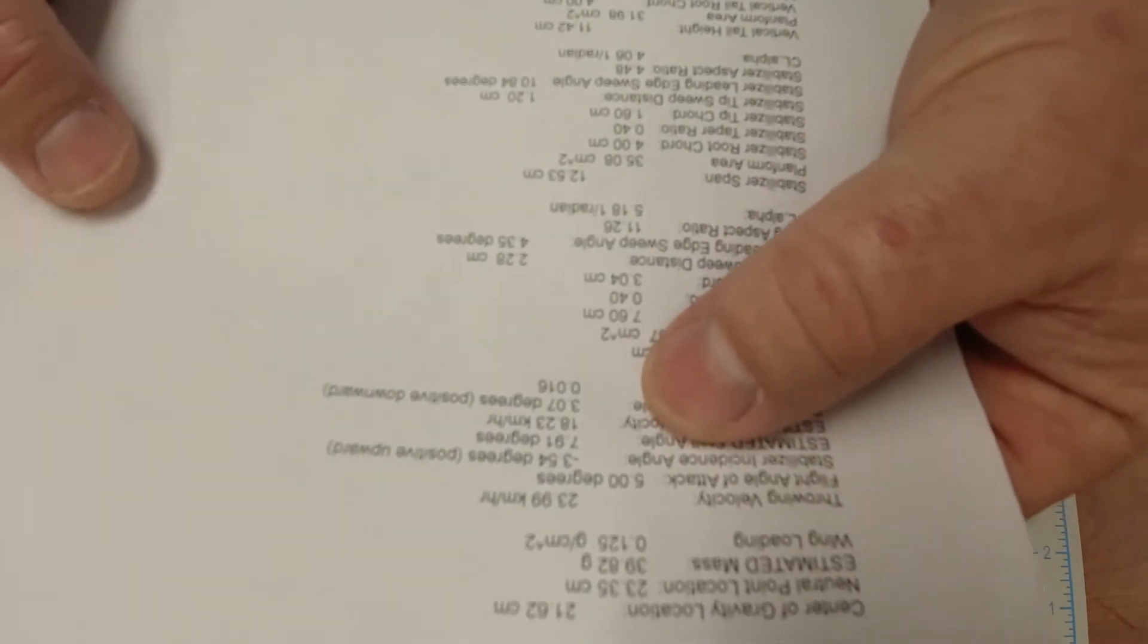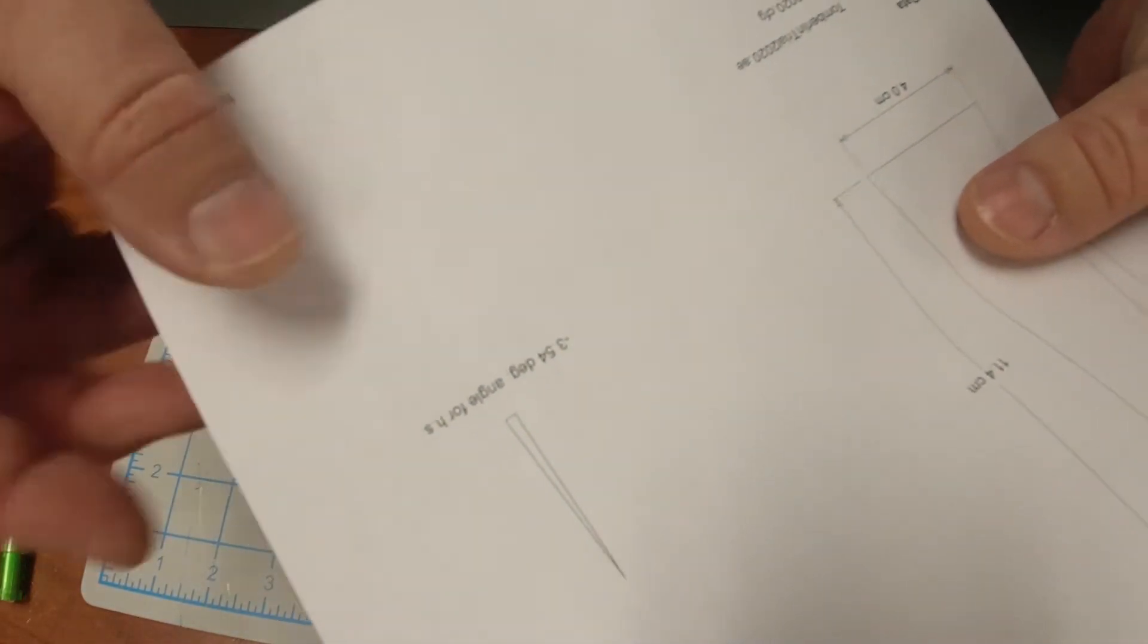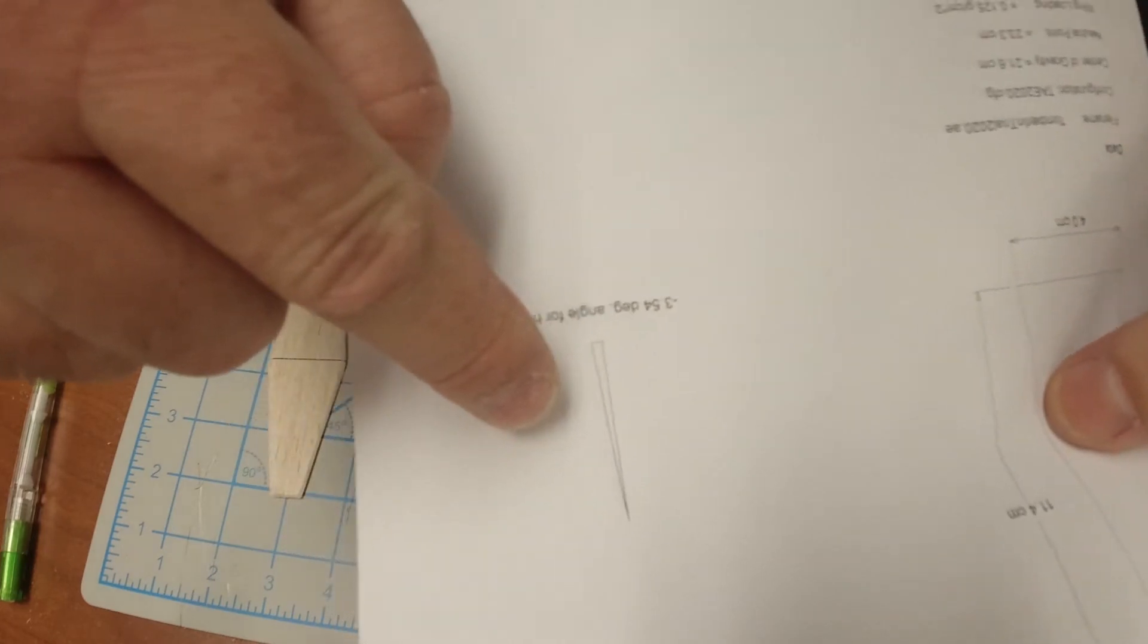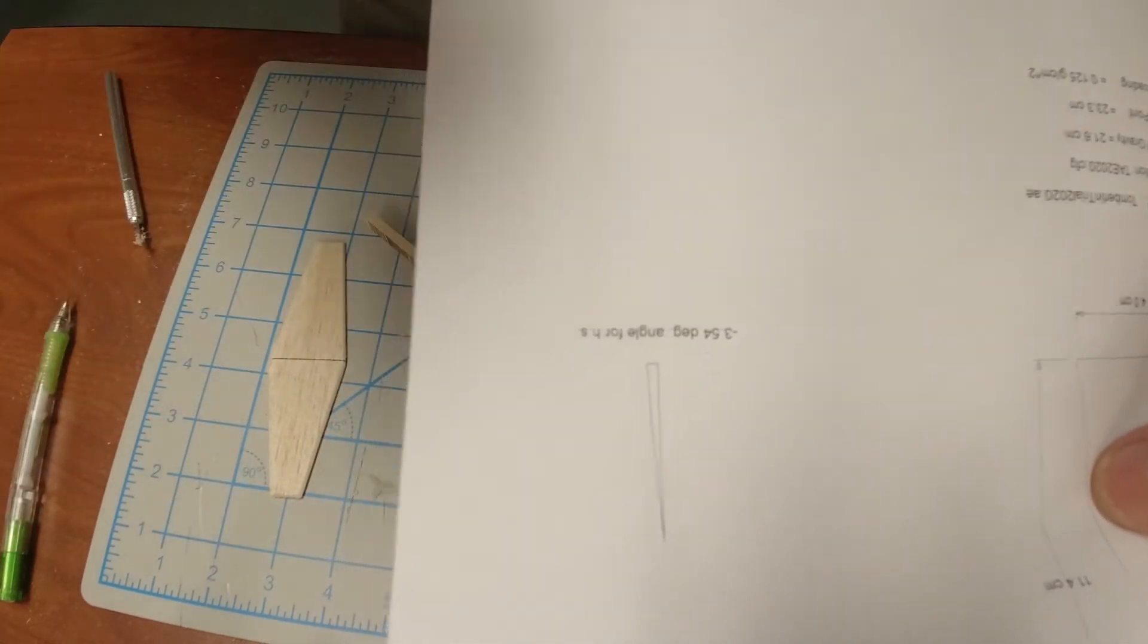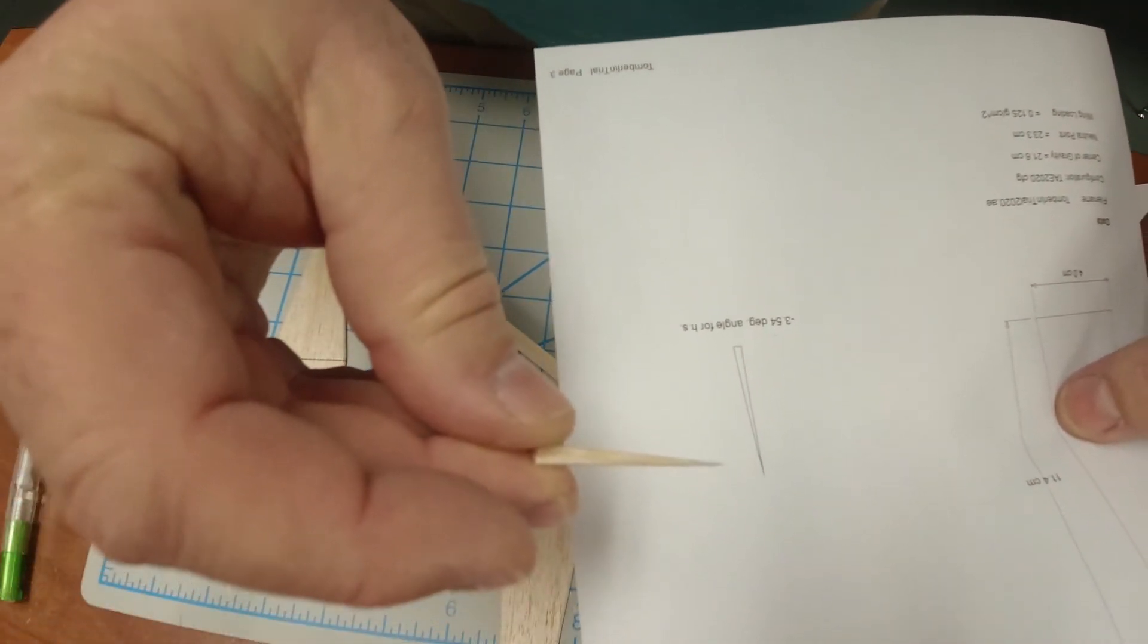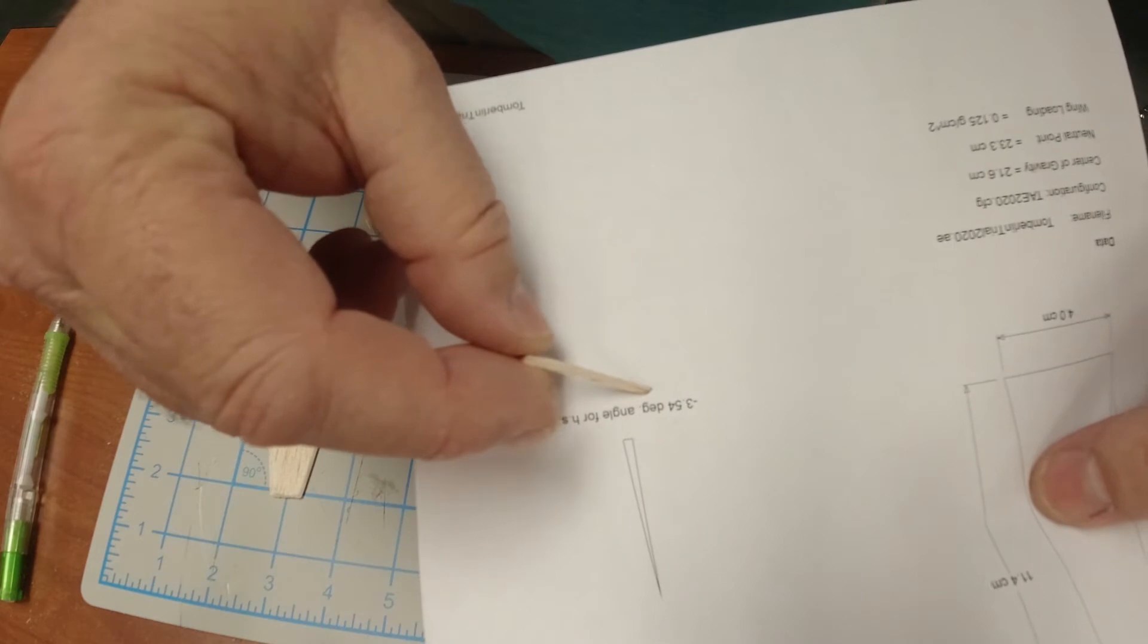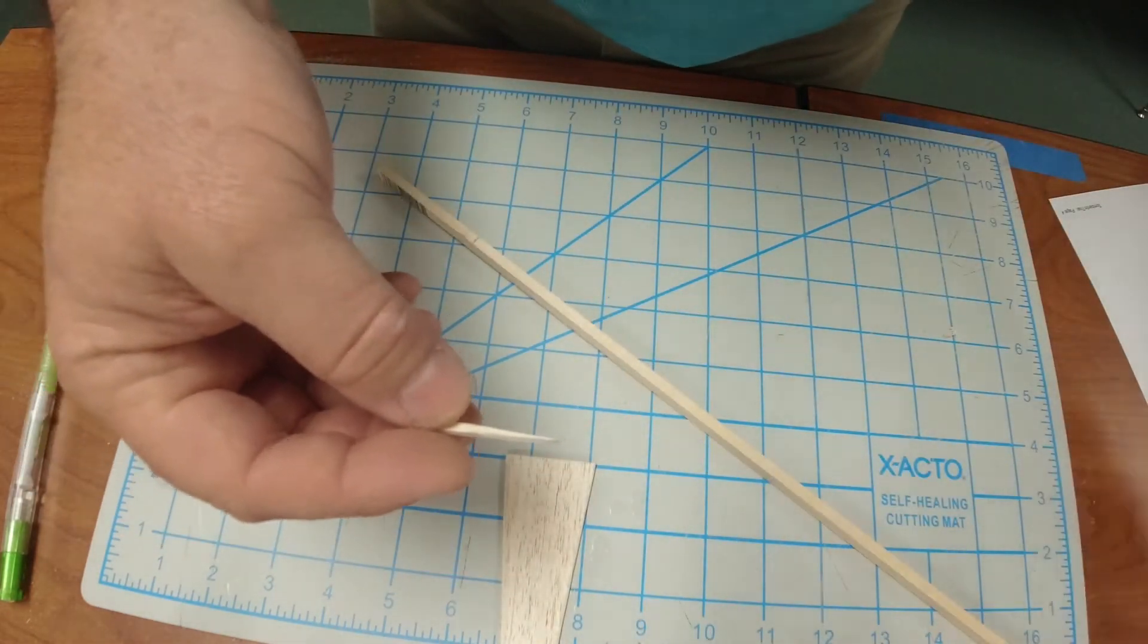The last thing is, if you look on your instruction page, there's something called stabilizer incidence angle. Mine is negative 3.54. It also has a little picture on page three that shows your stabilizer incident angle. If yours is big enough to try to cut out, go ahead and do that. If yours is so tiny like 0.54 or something, don't worry about it.